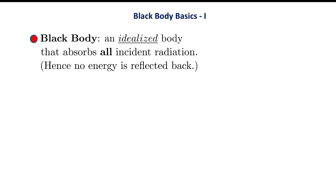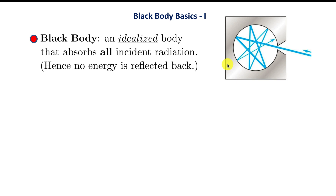We all know that black absorbs well and white reflects. Drawing upon this daily experience, we define the ideal black body. That idealized body is one that absorbs all incident radiation — no energy is reflected back. Here's a simple model: a ray of light comes in, it bounces inside, and each time it bounces it gets a little weaker because it's absorbed whenever it strikes the object, and eventually none of it is able to get out.